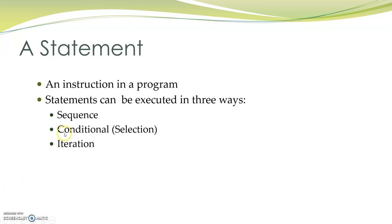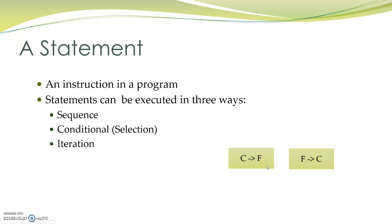First, sequence — we write statements which are executed one after the other. Second is conditional, where the set of statements selected to be executed depends upon a condition; they are also called selection statements. For example, in a temperature conversion program, you may convert from Celsius to Fahrenheit or Fahrenheit to Celsius — which set executes depends on the user's choice. Third is iteration, where statements are repeatedly executed.